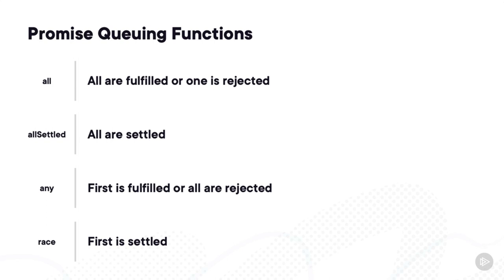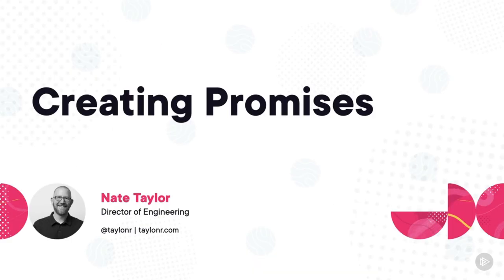Up until this point we've been focusing on how to consume promises, but how can you actually create a promise? The next module will show you the two main things you need to consider when creating a promise. By now you've seen some of the power of promises, as your code transitioned from nested functions to chains of thens and catches. But if you want to move past just consuming promises from other libraries, you need to know how to create your own promises.